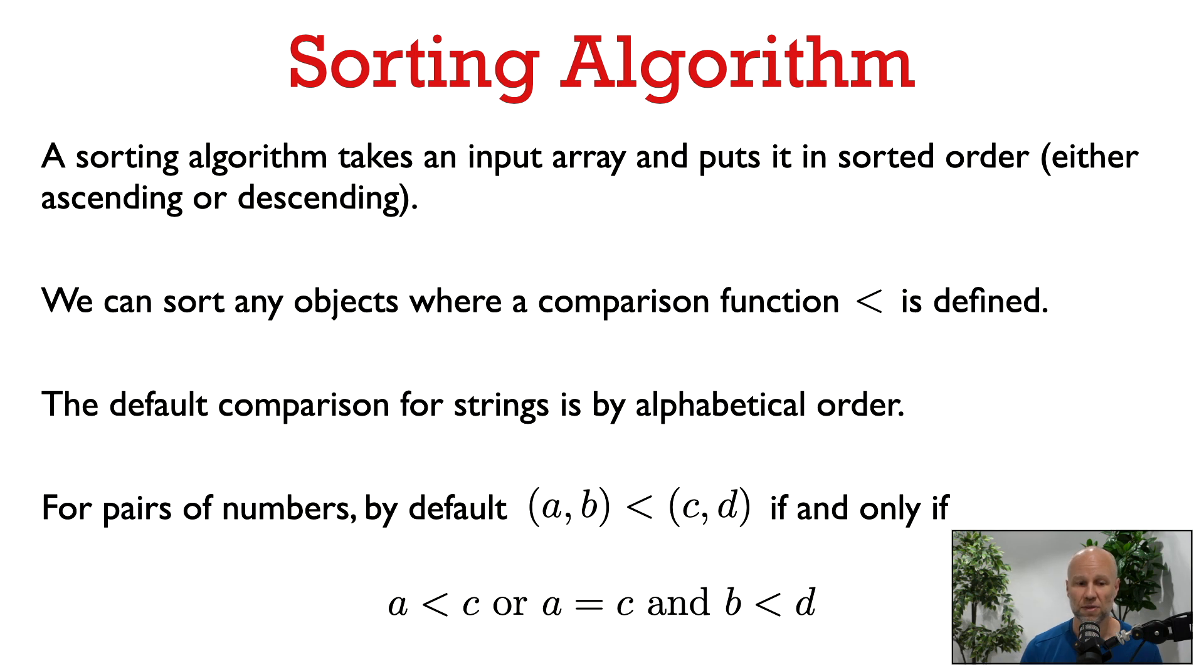If the elements are integers, then we can just use the normal ordering of the integers. If the elements of the array are strings, a natural comparison function is alphabetical order.